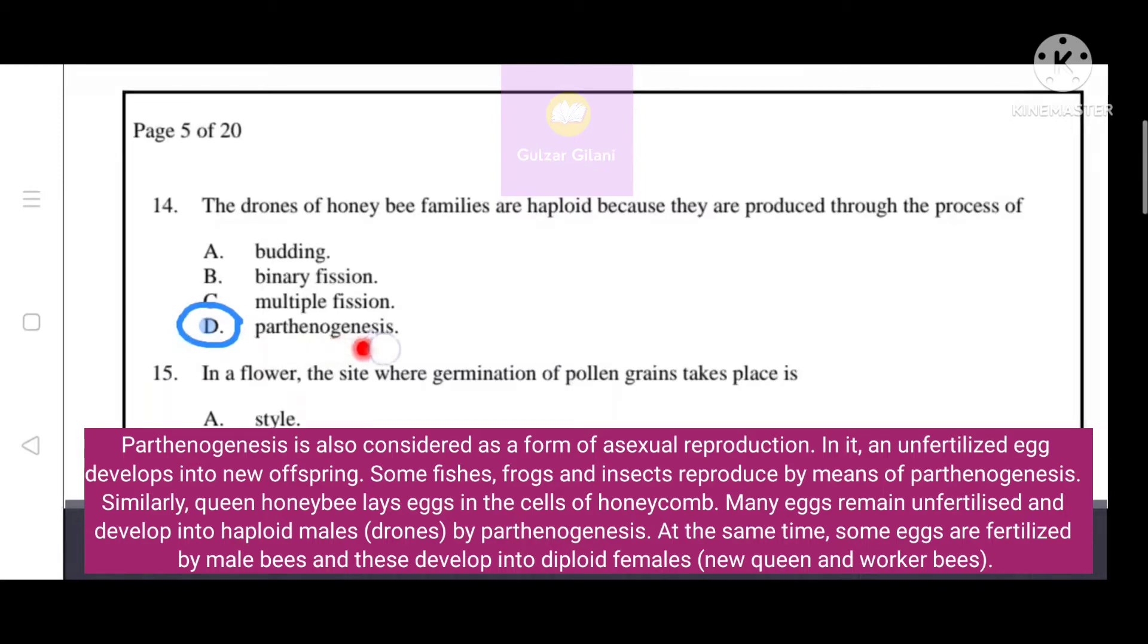As you know, parthenogenesis is also considered as a form of asexual reproduction. In it, an unfertilized egg develops into new offspring. Some fishes, frogs and insects reproduce by means of parthenogenesis. Similarly, queen honeybees lay eggs in the cells of honeycomb. Many eggs remain unfertilized and develop into haploid male drones by parthenogenesis. That's why the correct answer is option D, parthenogenesis.